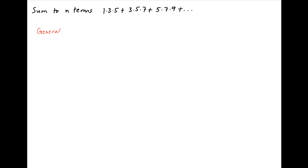We start by writing the general term of the given series U_R. This has three components. The first component is the general term of the series 1, 3, 5, ... which is 2R − 1. The second component is the general term of the series 3, 5, 7, ... which is 2R + 1. And the final component is the general term of the series 5, 7, 9, ... which is 2R + 3.